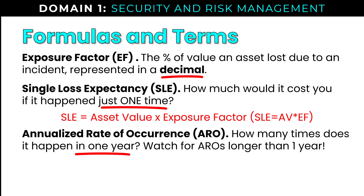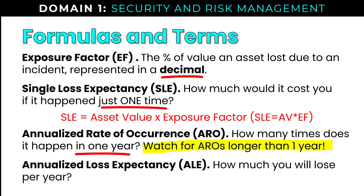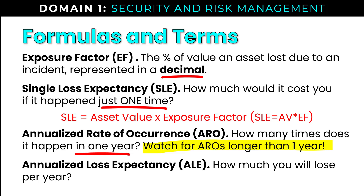The annualized rate of occurrence, or ARO, answers: how many times does this risk occur in one year? You want to be careful watching for AROs that happen over periods longer than one year — for risks that occur less often than once per year, maybe once every five, ten, or fifteen years. Likewise, be familiar with how to do the math if a risk occurs multiple times per year. And then annualized loss expectancy answers: how much will you lose per year? There are actually two formulas for ALE.